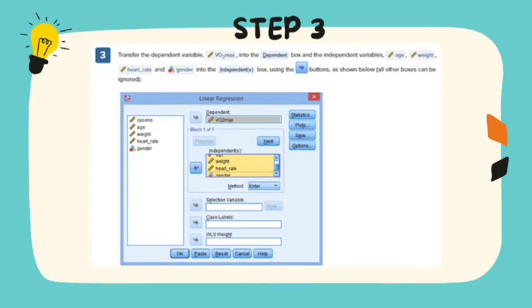And then step 3, transfer the dependent variables into the dependent box and the independent variables into the independent box using the next buttons as shown below. All other boxes can be ignored for a standard multiple regression. You should ignore the previous and next buttons as they are for sequential multiple regression.